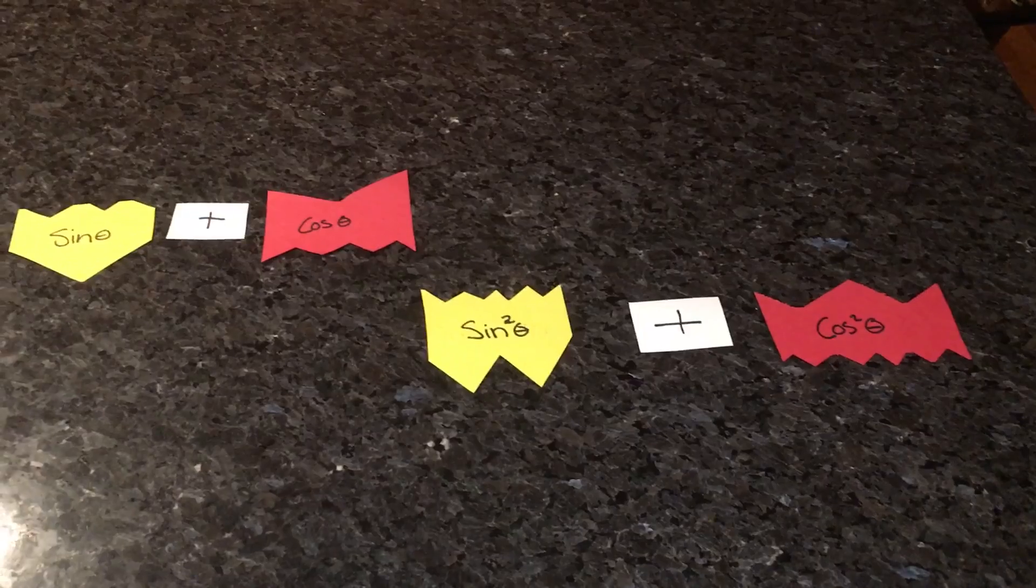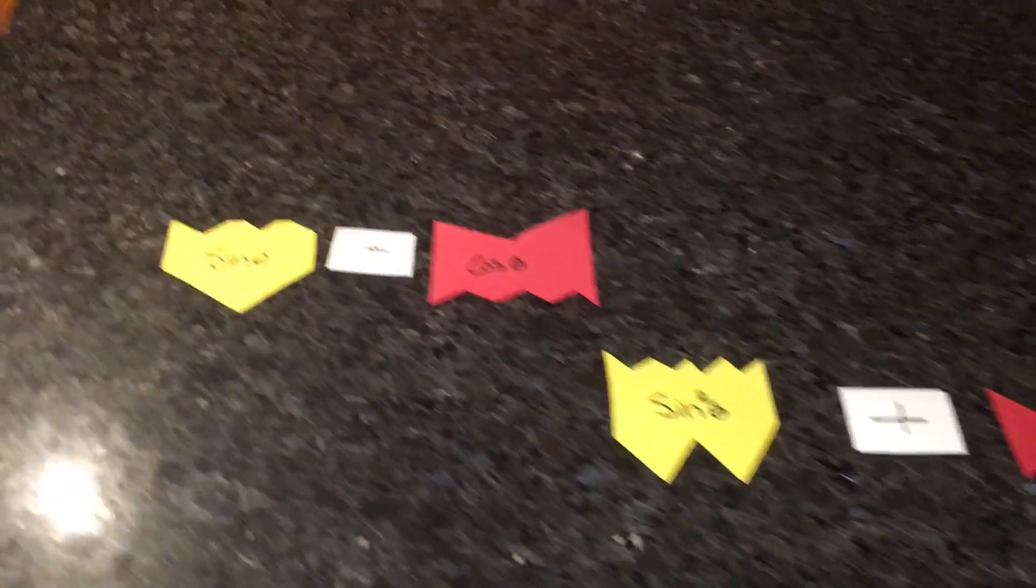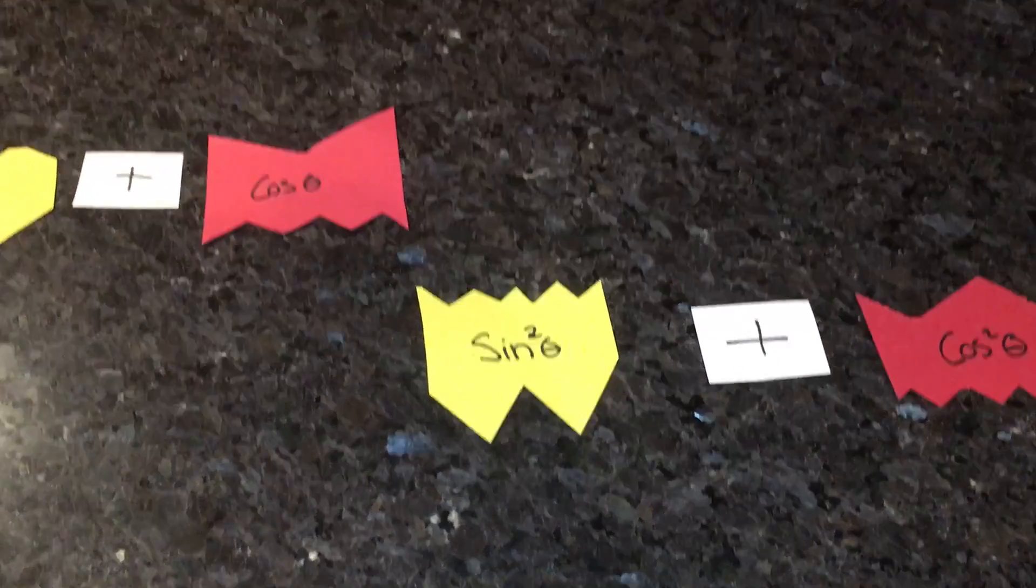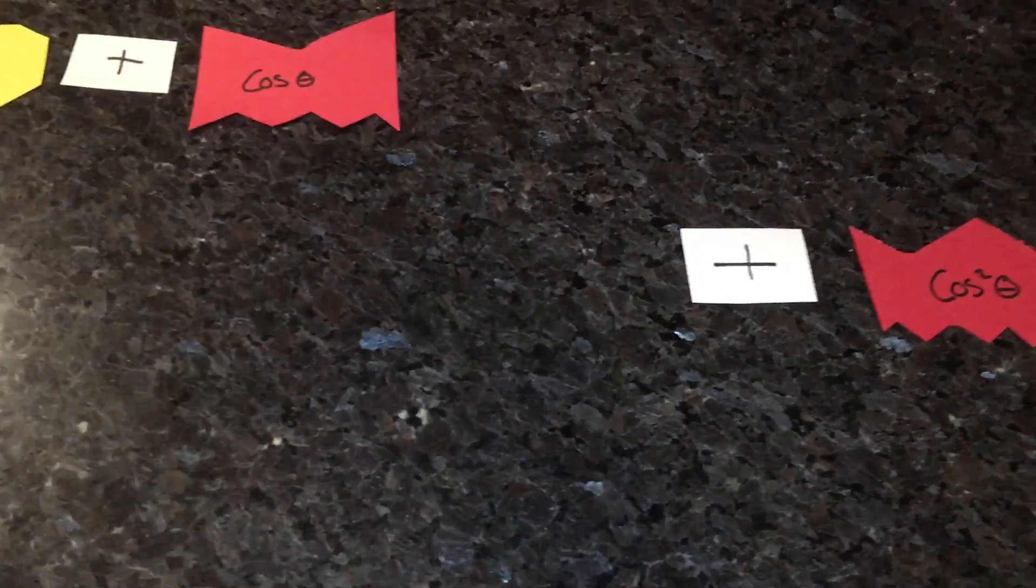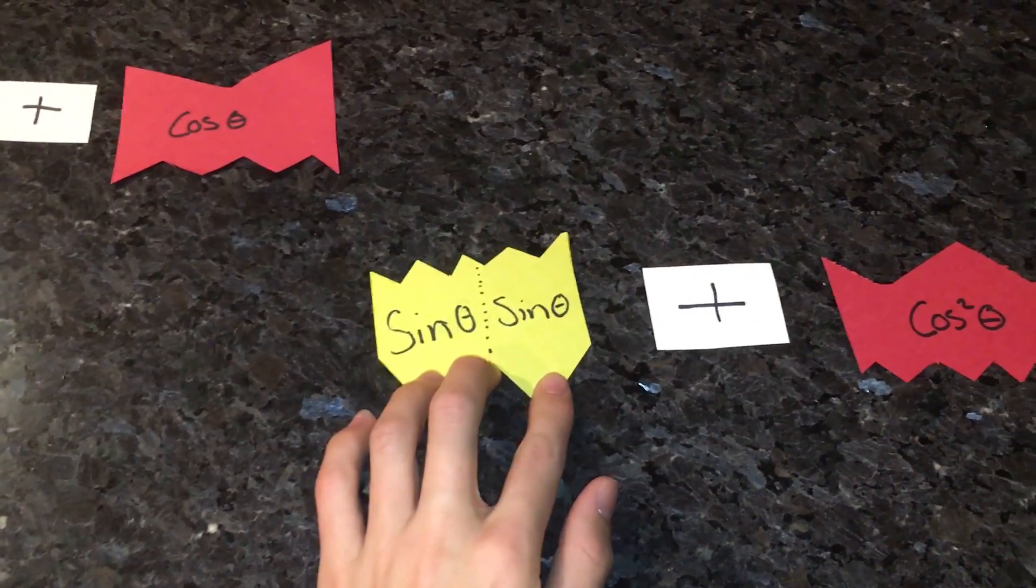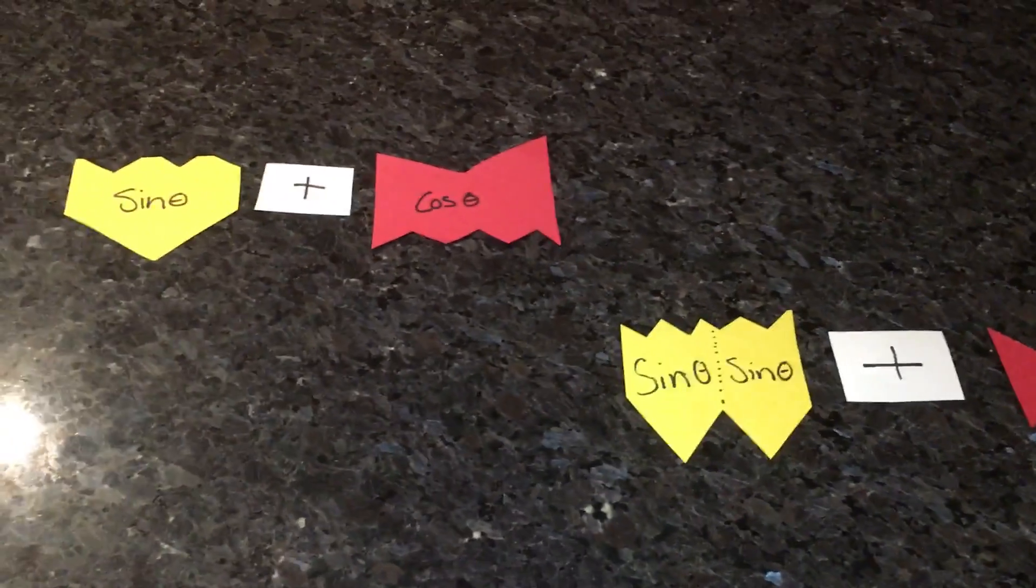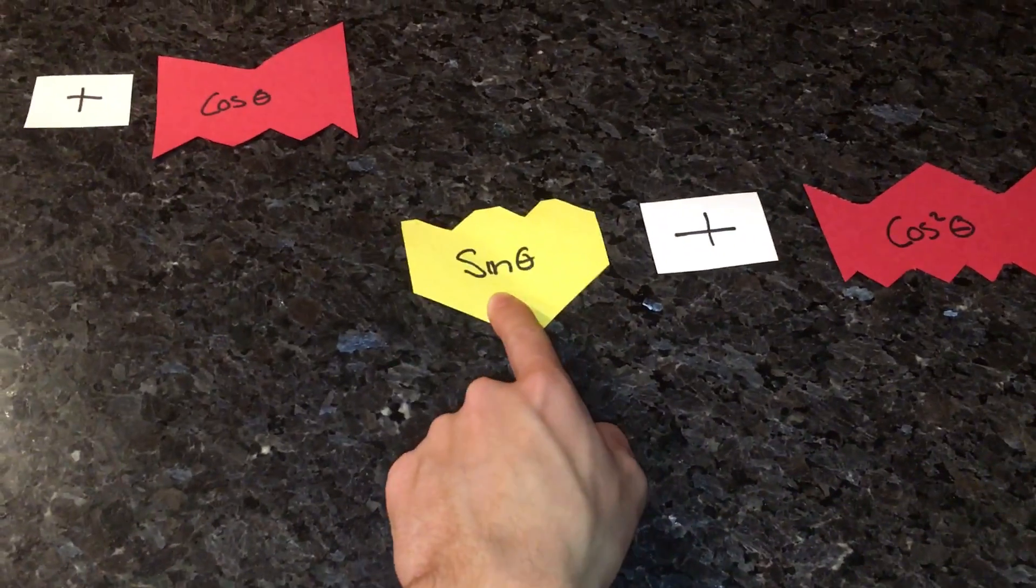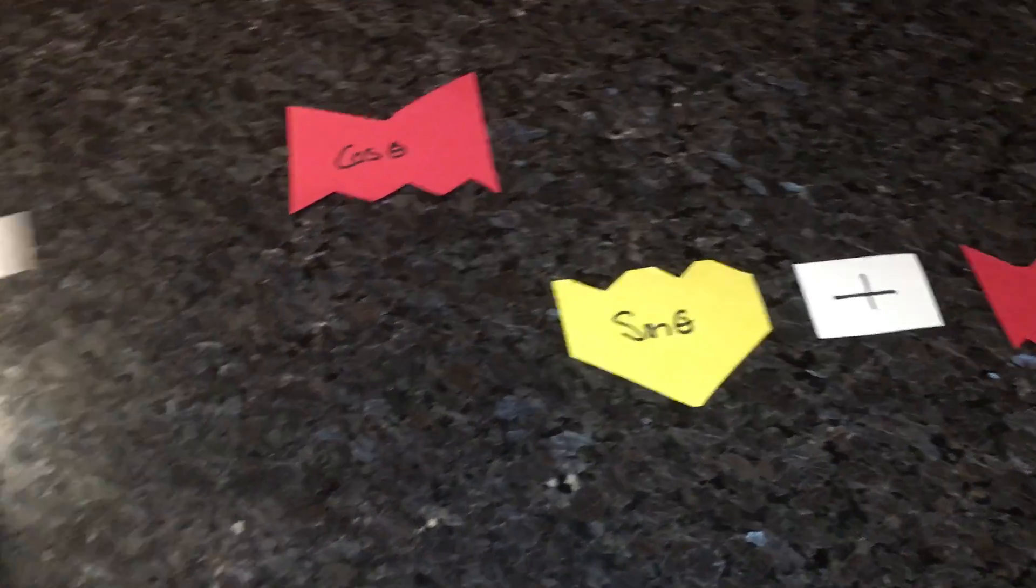Don't worry, we can still cancel more. Here we have sine theta and sine squared theta. And if you flip this over, there are two sines. So we can cancel one of these sines and one of these sines, making that just sine theta.